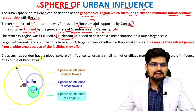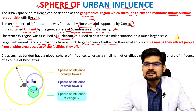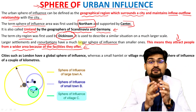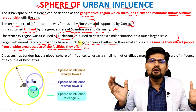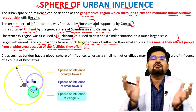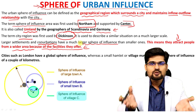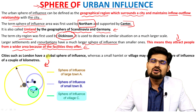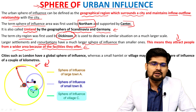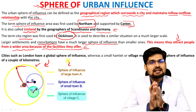Larger settlements and conurbations have a larger sphere of influence than smaller ones, meaning they attract people from a wider area because of the facilities they offer. A big city will have bigger influence and attract people from all around, while a small village or town will not attract people from far-off places. Facilities increase and diversity of the economy increases as we move up the ladder. It all depends upon the degree of urbanization in that particular settlement.